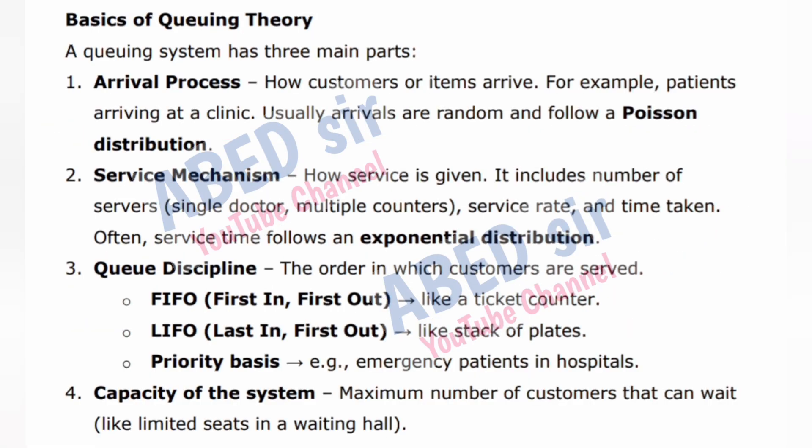Basics of queuing theory — a queuing system has three main parts: 1. Arrival process — how customers or items arrive. For example, patients arriving at a clinic. Usually arrivals are random and follow a Poisson distribution. 2. Service mechanism — how service is given. It includes number of servers (single doctor, multiple counters), service rate, and time taken. Often, service time follows an exponential distribution.